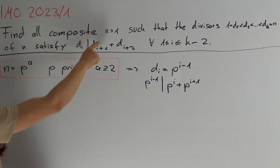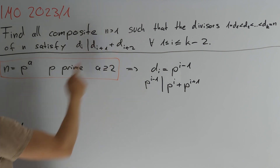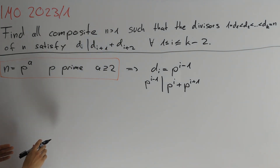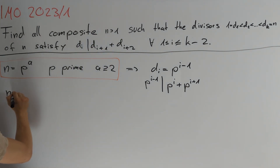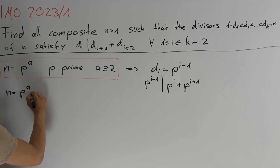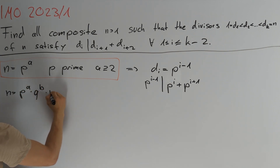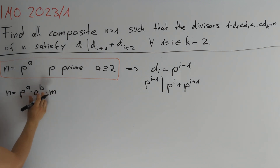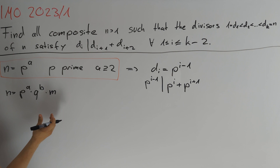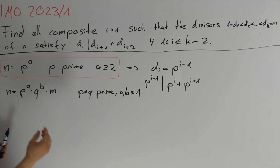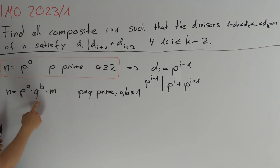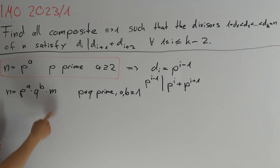From the fact that n is composite and greater than 1, we know that in any other case we can write n equal to p^a times q^b times some integer m, where a and b are positive integers, p and q are two different prime numbers. Without loss of generality, p is the smallest and q the second smallest prime divisor of n, and m is not divisible by p and q.